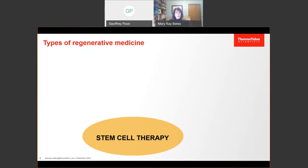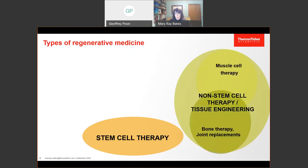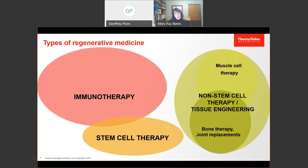When we think about regenerative medicine, we all think of stem cell therapy. But regenerative medicine is so much more than just stem cell therapy. Probably the biggest type of regenerative medicine is not stem cell therapy, but other cell types and tissue engineering. This can include muscle cell therapy, skin cell therapy, bone therapy, and joint replacements. That's right now the biggest part of the market.